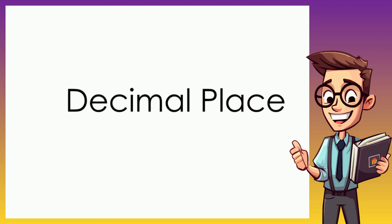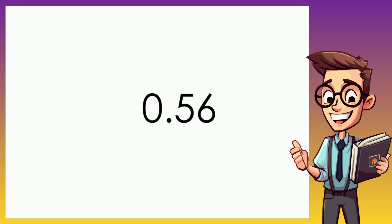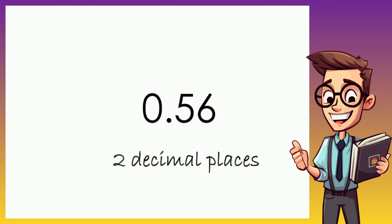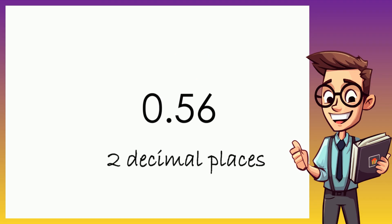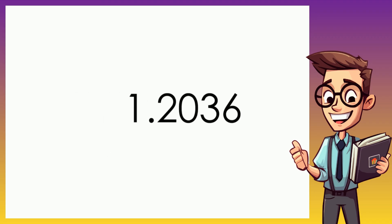To divide a decimal, you must know how to count the decimal places. If I have 0.56, to count the decimal places you simply count starting from the right to the decimal point — that's 1 and 2. Next we have 1.2036; again, we count from the right up to the decimal point: 1, 2, 3, and 4.